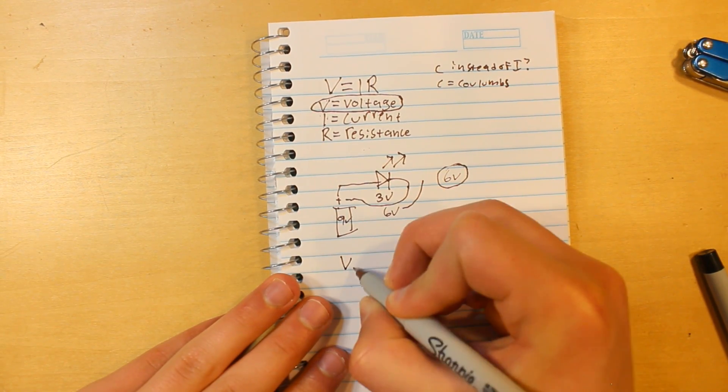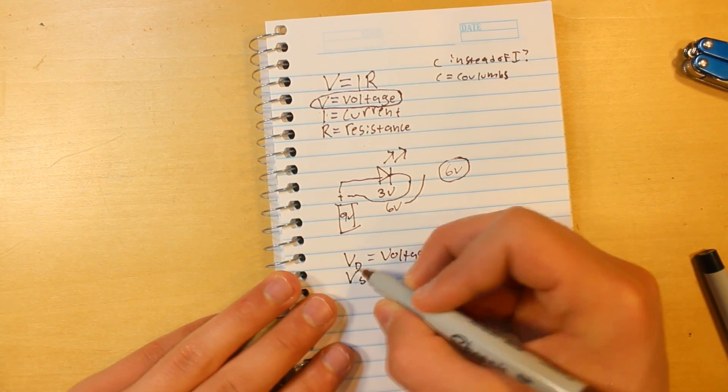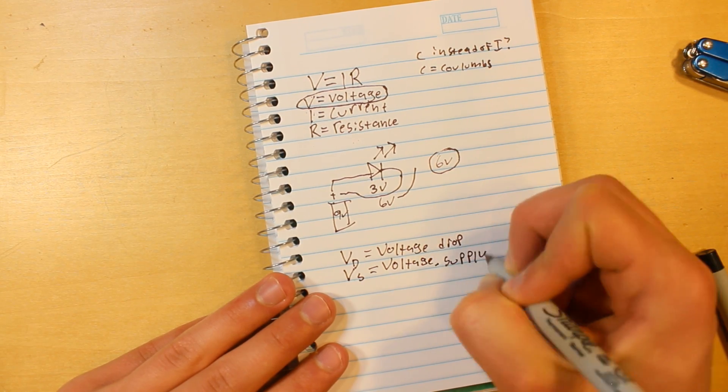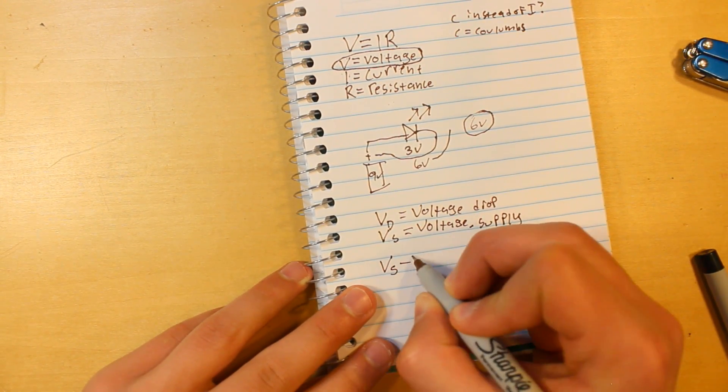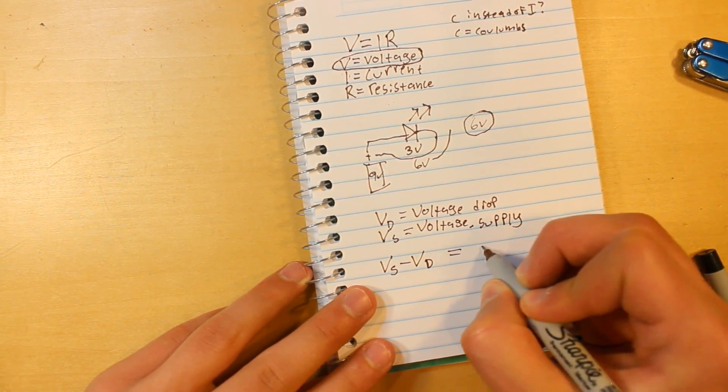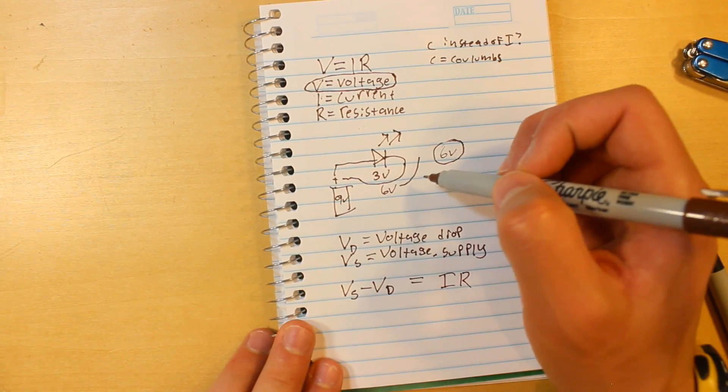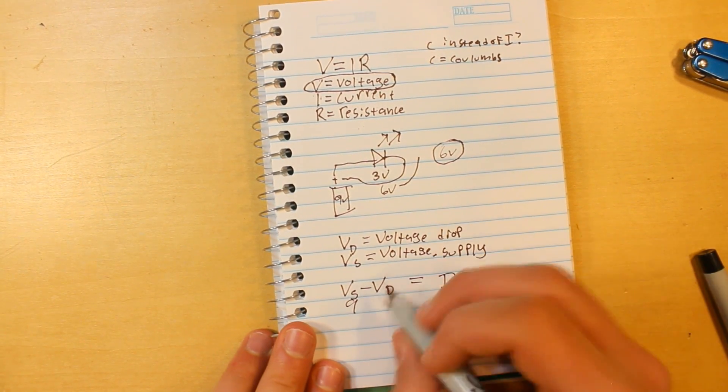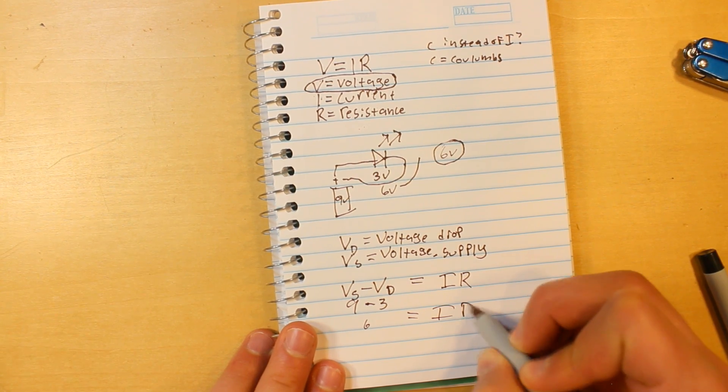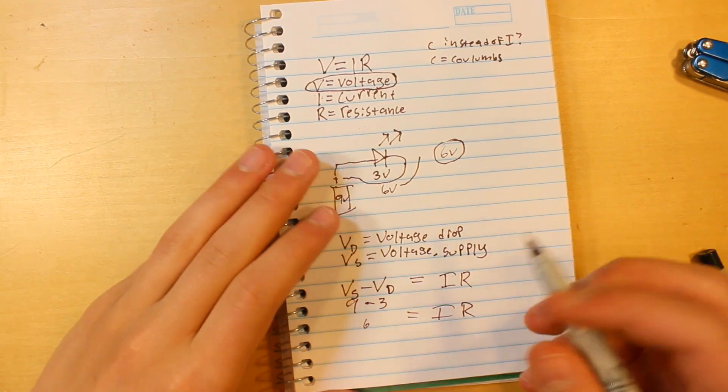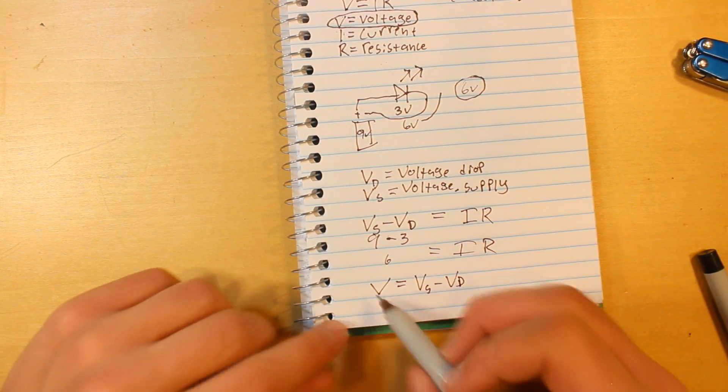Now, let's call the voltage drop V sub D, and then let's call the supply voltage V sub S. Okay, so another way to write Ohm's Law would be to say V S minus V D equals I R. Because if we go back up to this example right here, V S equals 9, V D equals 3, so we plug 6 into Ohm's Law, and that would equal current times resistance. However, for shorthand's sake, let's just write V equals V S minus V D. This is just a shorter way to write it.